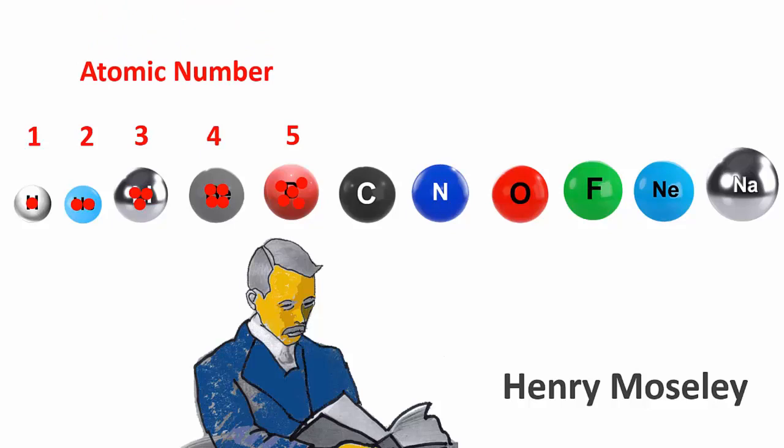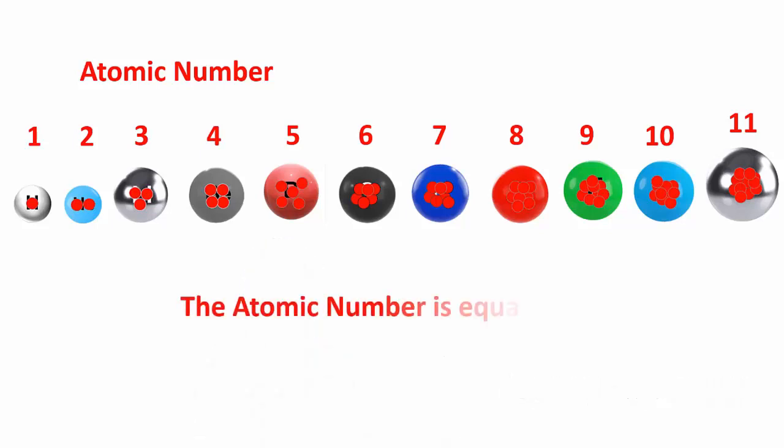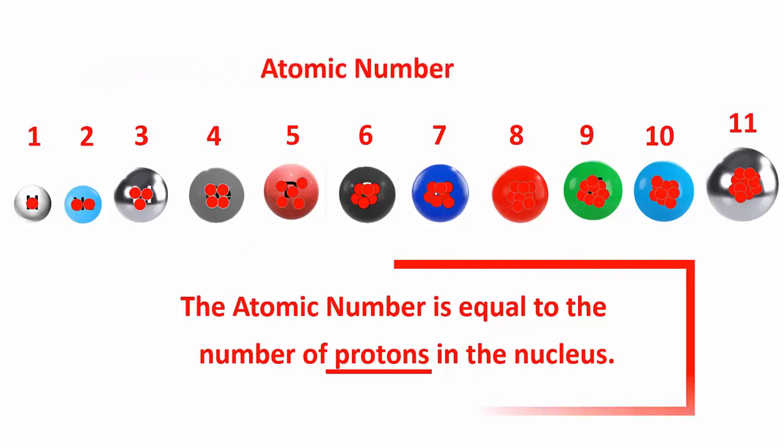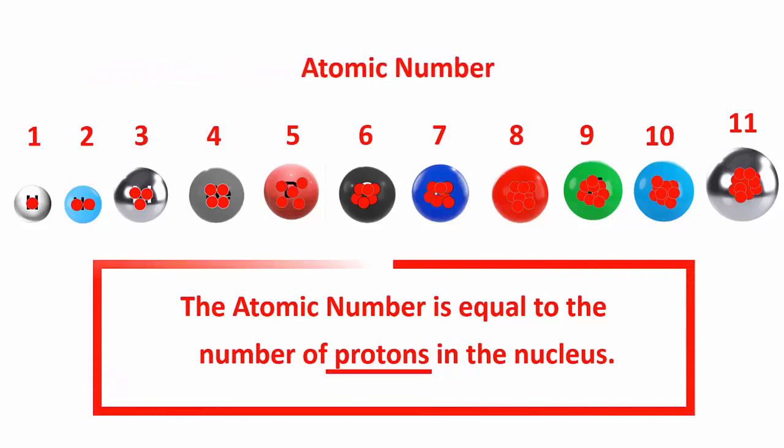How many in a sodium atom? 11 of course. The atomic number is equal to the number of protons in the nucleus. This is a more modern definition of atomic number.